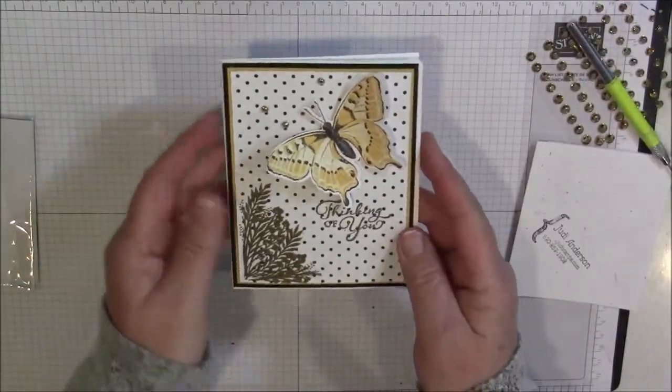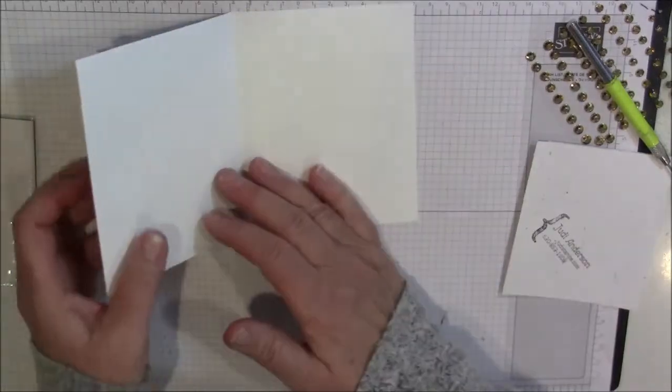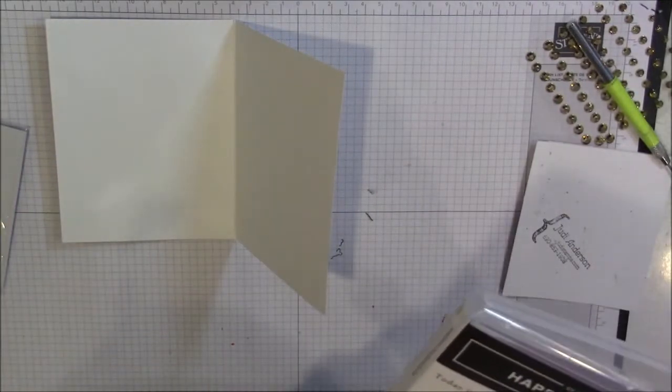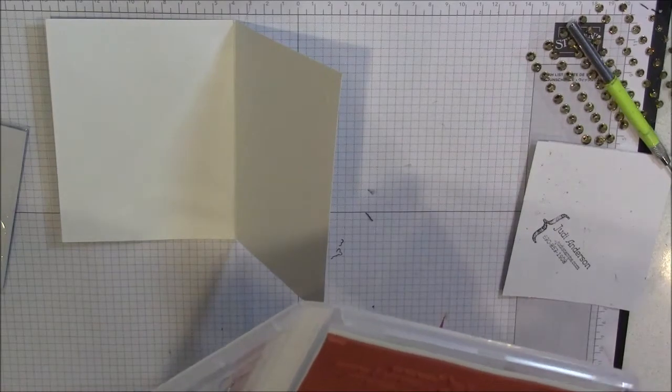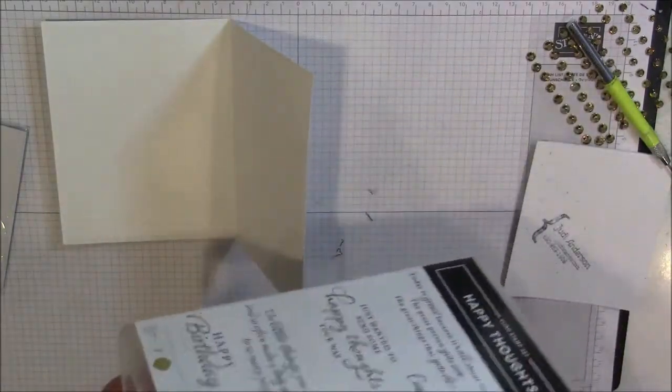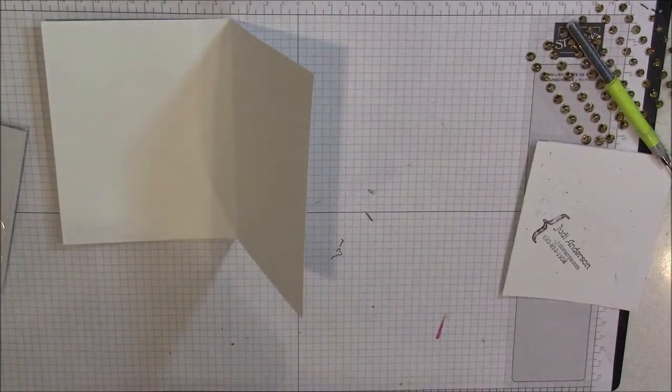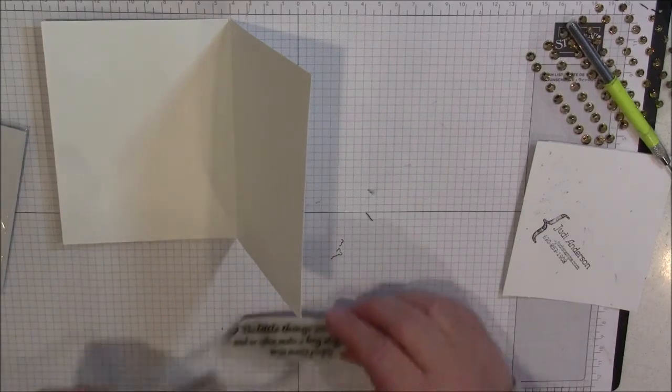So a simple card. Let's go to the inside and finish our verse. So this has Thinking of You. And I think on the inside I am going to put the little things you do so well and so often make a big difference to so many people. Which is this one right here. And we are going to do it. You could emboss it. But I am just going to do it in memento ink.